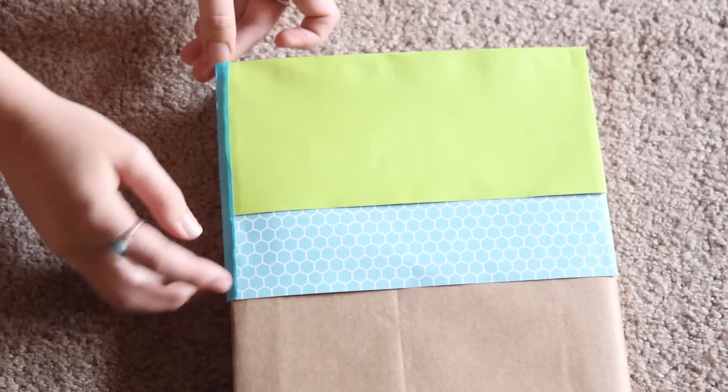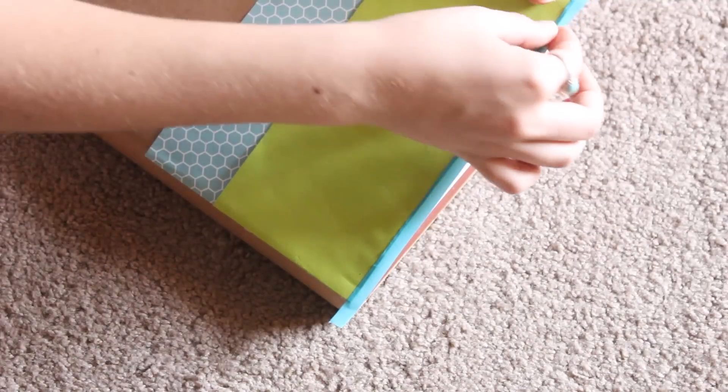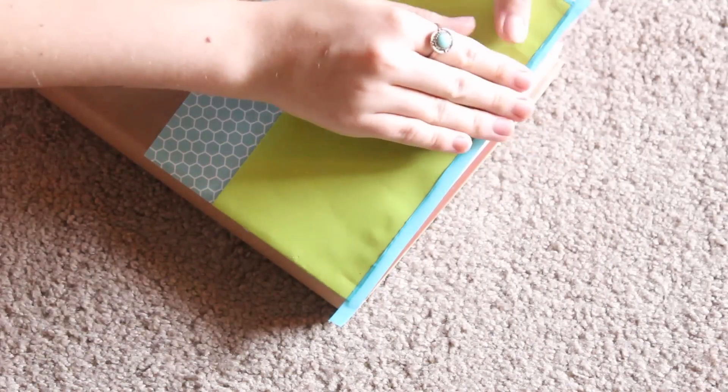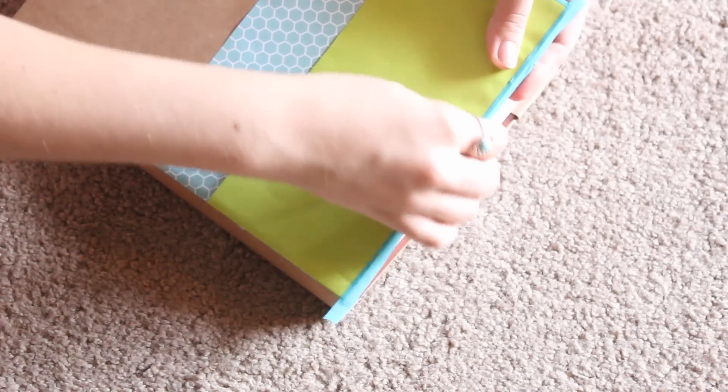So to make our edges nice and clean, I decided to add a little bit of washi tape to the edges. I just didn't like how they looked a little bit unfinished and this made it look really nice and super finished.